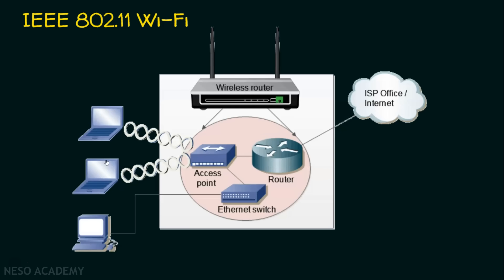If a client wants Internet connectivity — say a user on a laptop wants to access Google.com — they open a browser, and the connectivity between the laptop and the access point uses 802.11 Wi-Fi technology. Between the access point and the router it is wired, and the router forwards packets to the ISP router to provide Internet connectivity. This whole scenario can also be replaced with a wireless router, which provides the functionality of a router using wireless technology and can extend its capability by providing an interface to establish a local area network as well.